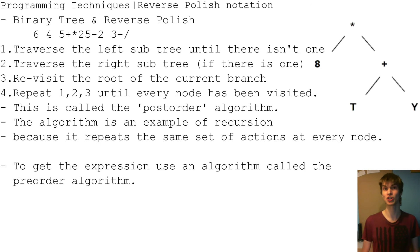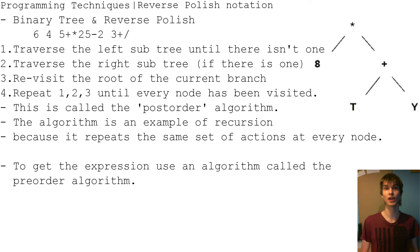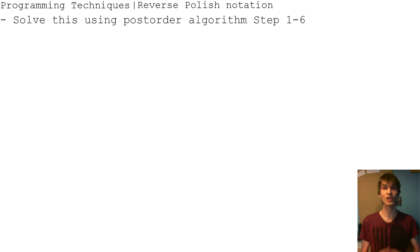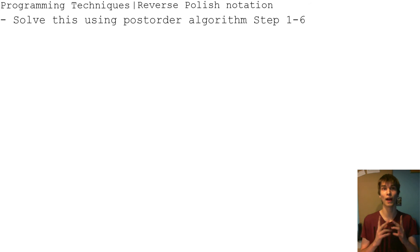To get the expression, use an algorithm called the pre-order algorithm: visit the root node, then visit the left branch, then visit the right branches.